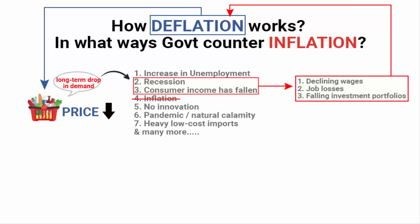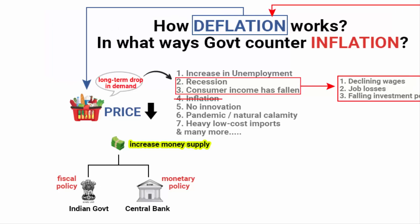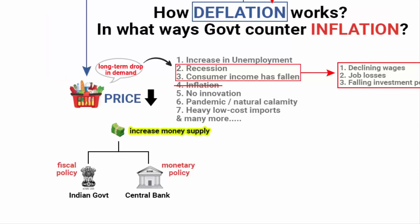So I hope you have got a general idea regarding what is deflation and how it works. Now, to combat deflation, the government and the central bank increase the money supply. This can be achieved by doing tweaks in both monetary policy and fiscal policy. Monetary policy is used by the central bank and fiscal policy is used by the finance ministry. Whenever the government and the central bank use these tools to increase the money supply, people often think the central bank or government is printing money.